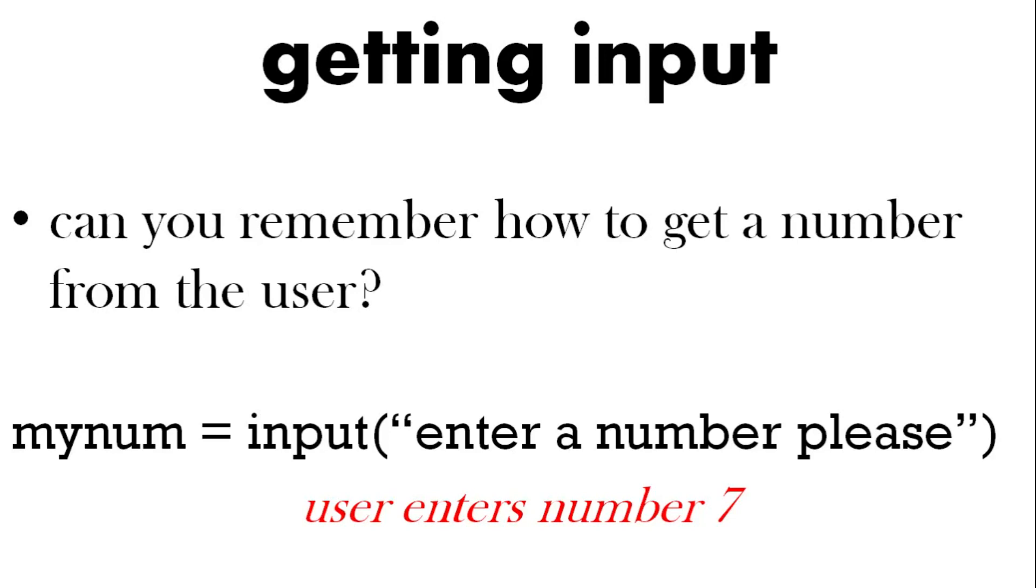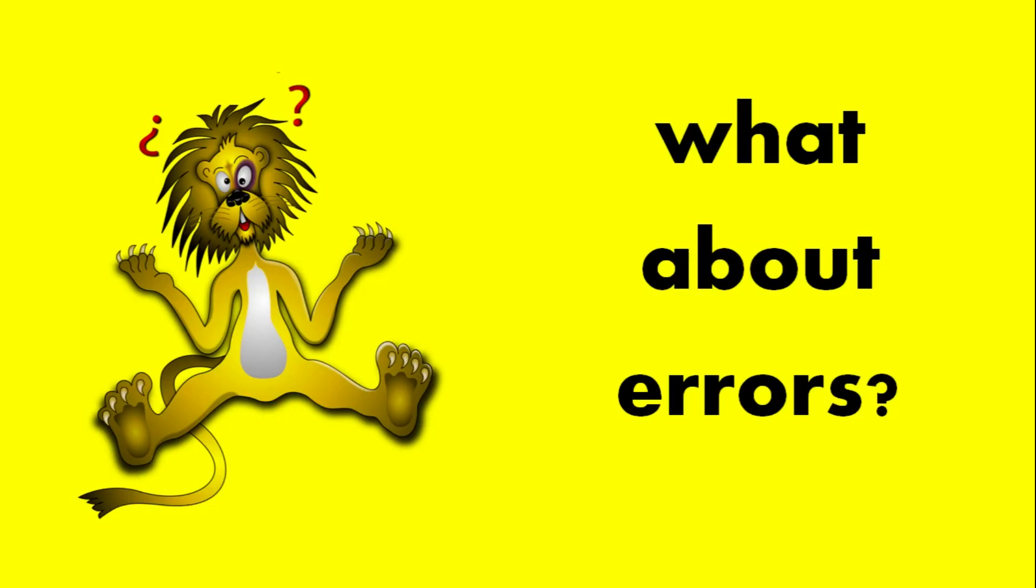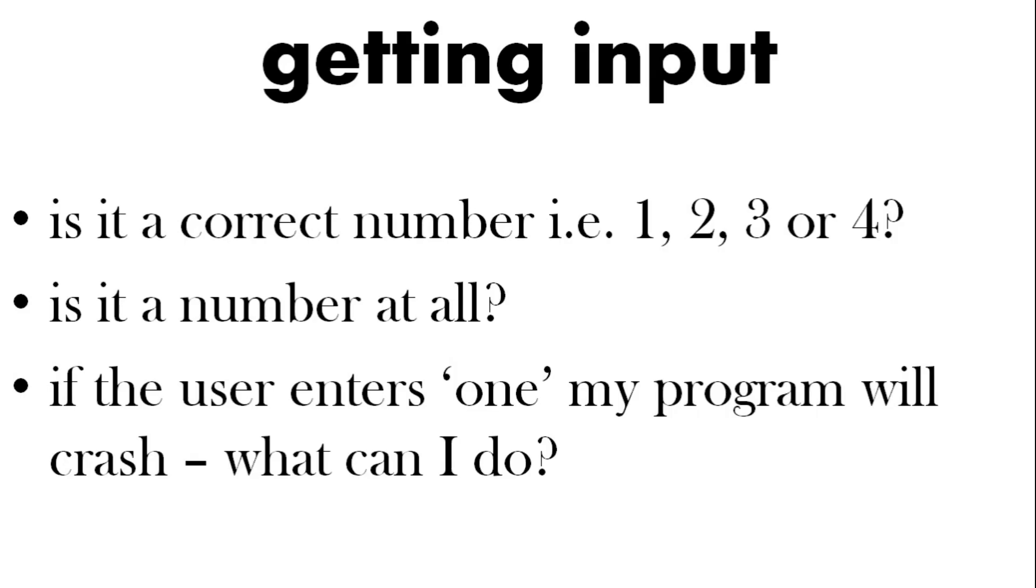For a menu you're going to ask the user for input. So here's the code for the user to enter a number. But what about errors? When you get input from a user there can be errors. So we want the correct number one, two, three or four. So it could be an incorrect number. The user might put in something that's not even a number. Can you deal with that?